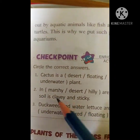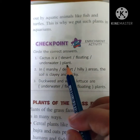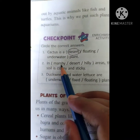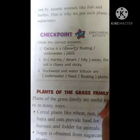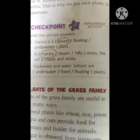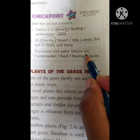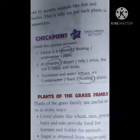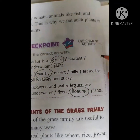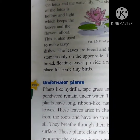Let us do this checkpoint also. Circle the correct answers. Cactus is a desert plant. In marshy areas, the soil is clayey and sticky. Duckweed and water lettuce are floating plants — we have just learnt that. Please do this in your textbook, children. I hope you can do everything. Take care of yourselves. Bye-bye, children.